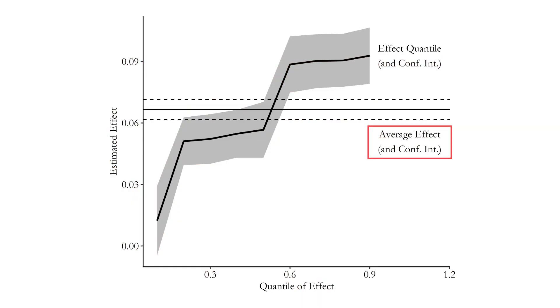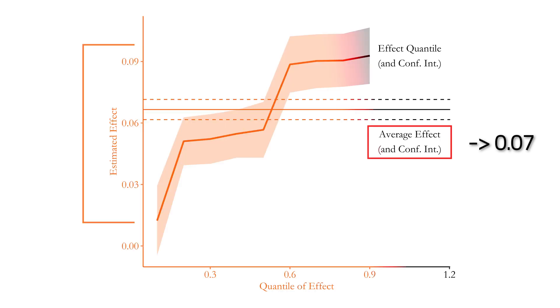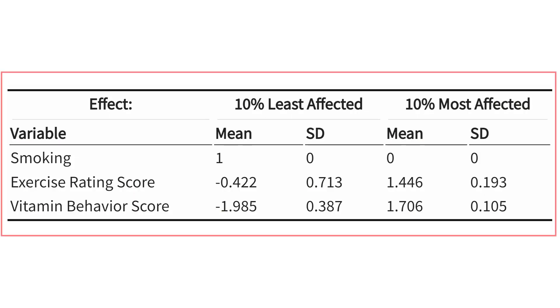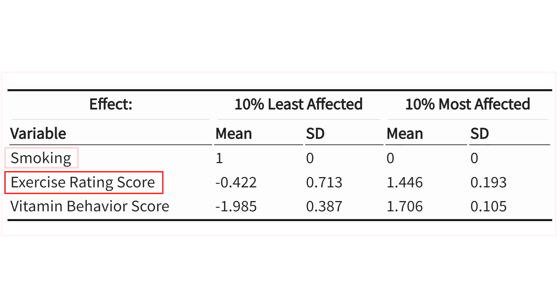It's still a bit difficult to interpret individually, but what sorted effects does is predict the individual effect for every person and then graph out the distribution of effects. You might get a graph where even though the average effect is something like 0.07, for different individuals it varies wildly from about 0.02 all the way up to 0.1. You also get a standard error on the effect at every different quantile, giving a nice distribution. Even better, you can see who is in different parts of the distribution — for example, looking at the effect of being recommended vitamin E on whether you actually take it, interacting with exercise levels, smoking status, and vitamin behavior score.